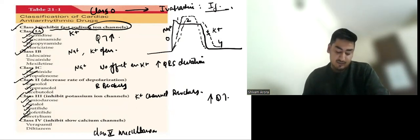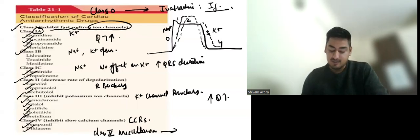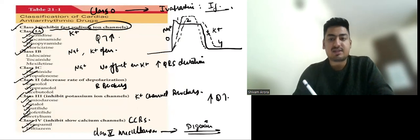Then we have class 4 agents, in which we have calcium channel blockers like Verapamil and Diltiazem. And then we have class 5 agents miscellaneous in which we have digoxin and multiple other drugs. So all the best. Just keep studying.